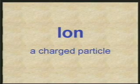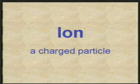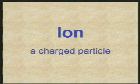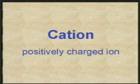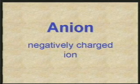Before we get started, let's go back and review a few terms from lecture. First of all, let's define an ion. An ion is a charged particle, either positive or negative. These positively and negatively charged species are given specific names. A cation is a positively charged ion. An anion is a negatively charged ion.